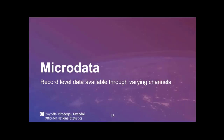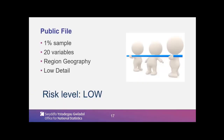Now we talk about microdata. As UKDS users, you may be very familiar with these record level data releases. There is actually quite a range. First will be the public teaching file — a 1% sample with 20 variables at regional level geography. The level of detail in the classifications is low, so risk level is low. It really is a teaching file just to get people using the variables, maybe in some software — teaching people how to analyse data is the purpose of this file.